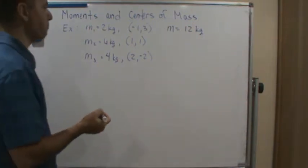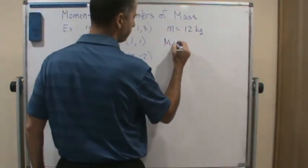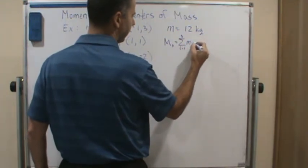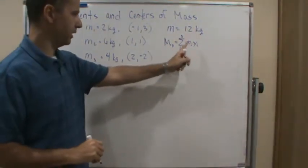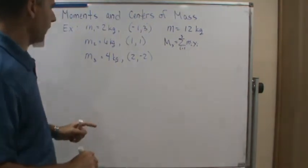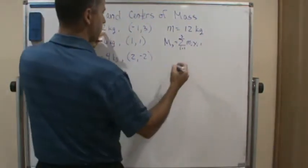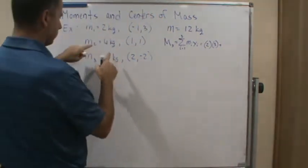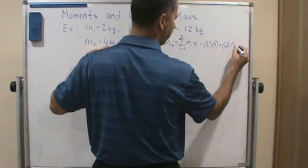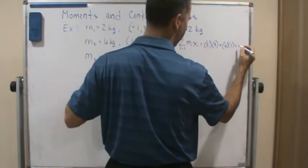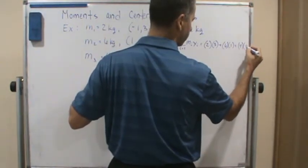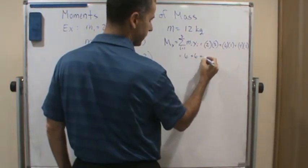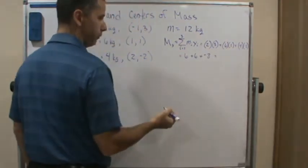And now we need to figure out m sub x and m sub y. Now remember, m sub x is the summation of i equals 1 to 3 of m sub i times y sub i. With respect to the x axis means that we're going to be using y coordinates. And so now we're going to take what? This is going to be 2 times 3 plus 6 times 1 plus 4 times negative 2. Okay, and so m sub x is going to equal 6 plus 6 plus negative 8, which is going to be 12 minus 8, which is 4.